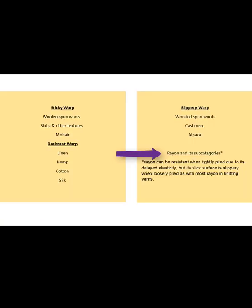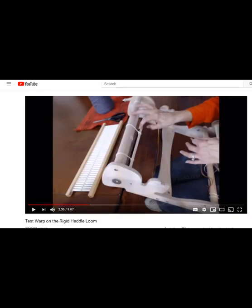Note that rayon can be resistant when tightly plied due to its delayed elasticity, but its slick surface is slippery when loosely plied, as with most rayon in knitting yarns. As always, sample, sample, sample. I have a YouTube video for that too — it's Test Warp on the Rigid Heddle Loom.